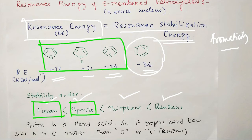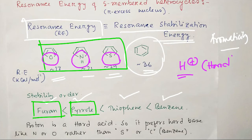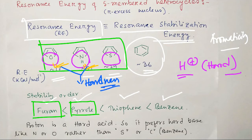In addition to aromaticity, if you look at the structures: furan has oxygen, pyrrole has nitrogen, and thiophene has sulfur. Since we are discussing acid stability, mainly protic acid — which is hard in nature — it will prefer hard bases. Oxygen and nitrogen are harder in nature, so because of this hardness they prefer the proton. That is a secondary reason they are more reactive towards acid. Two factors: lesser aromaticity for furan and pyrrole, and the hardness of the heteroatom.